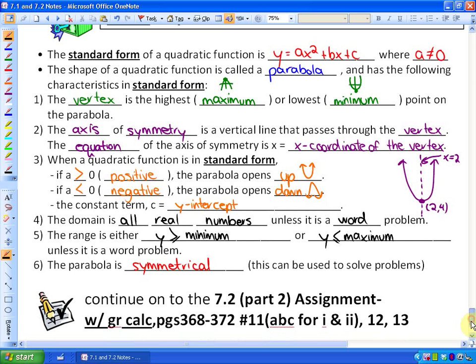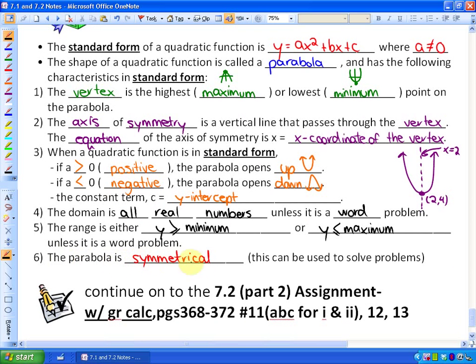And finally, characteristic 6 is that the parabola is symmetrical, and this can be used to solve problems. So if we know that one half of the parabola is symmetrical to the other one, we can use that to answer any symmetry-related questions.